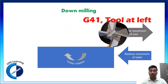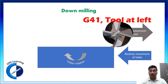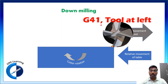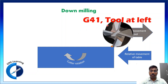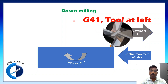In down milling, looking at the tool compensation, the tool is at left, so it will always be G41. Because the cutter rotation in most cases remains clockwise, down milling will always be G41 with the tool at left. In rare cases you may see the other way, but most of the time in down milling it will be G41.